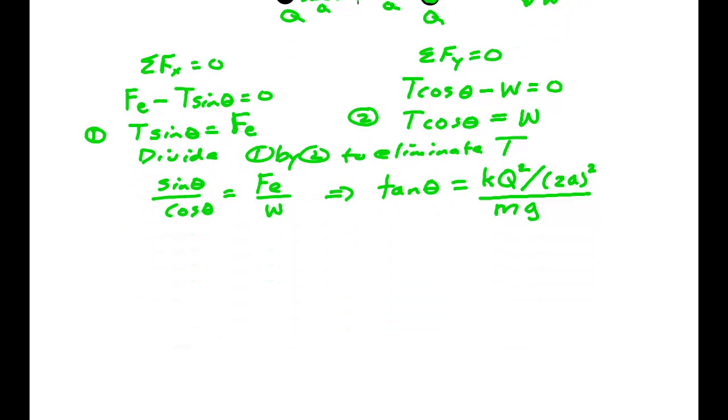Now, it says for me to solve for Q. So K Q squared is equal to 2A squared times MG times tangent of theta. So Q squared is 2A squared, MG, tan theta, all of that divided by K. Now, I've got to find this A. So how am I going to find that A?